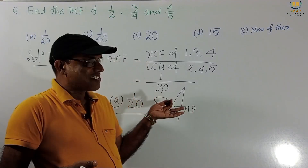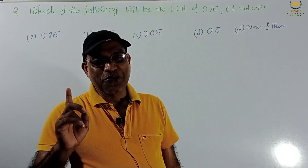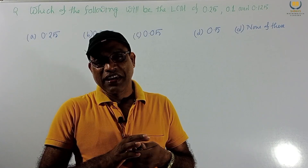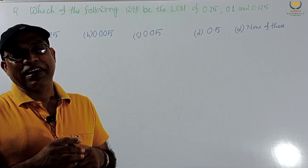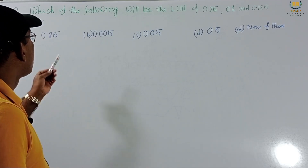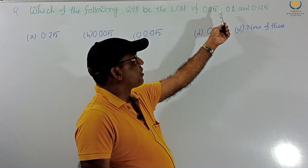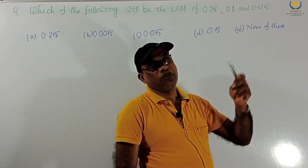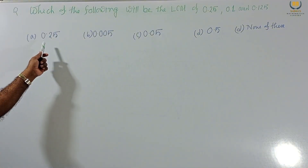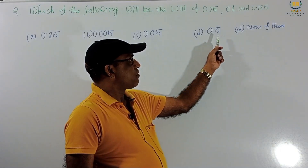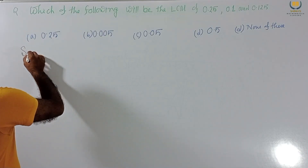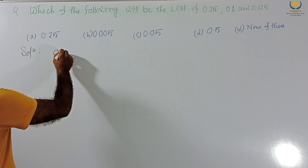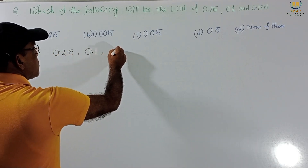Very nice solution. So if fractions are given, we can easily find LCM and HCF. Now, if we have decimal numbers, what will be the LCM and HCF? Consider this problem: Which of the following will be the LCM of 0.25, 0.5, 0.1, and 0.125? Options: 0.25, 0.005, 0.05, 0.5, and none of these.